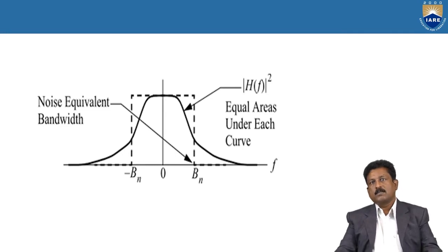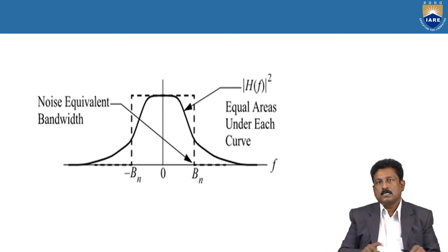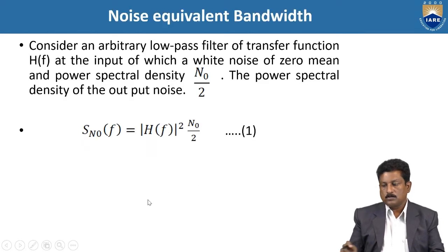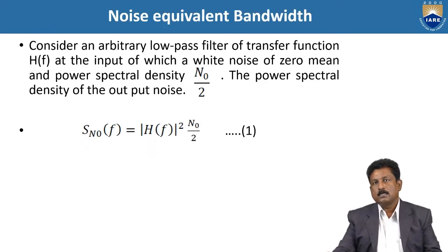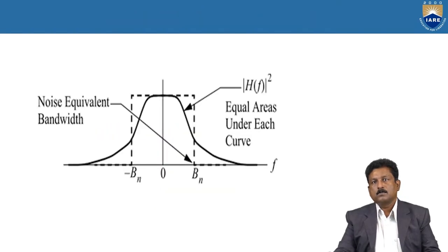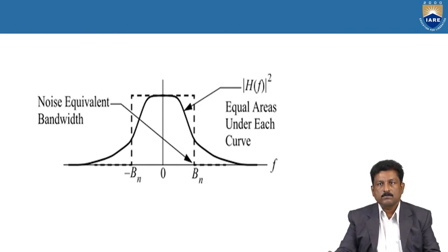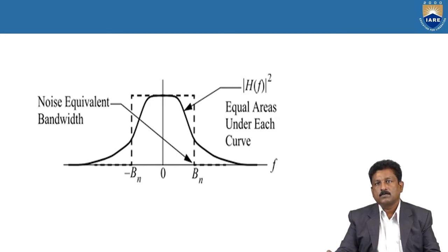This is the noise equivalent bandwidth. You can see this is B_N and -B_N. The difference between these two gives the equivalent bandwidth. The noise equals the area under the curve, and the integral of |H(f)|² gives the noise equivalent bandwidth. The difference between B_N and -B_N gives the overall noise equivalent bandwidth.